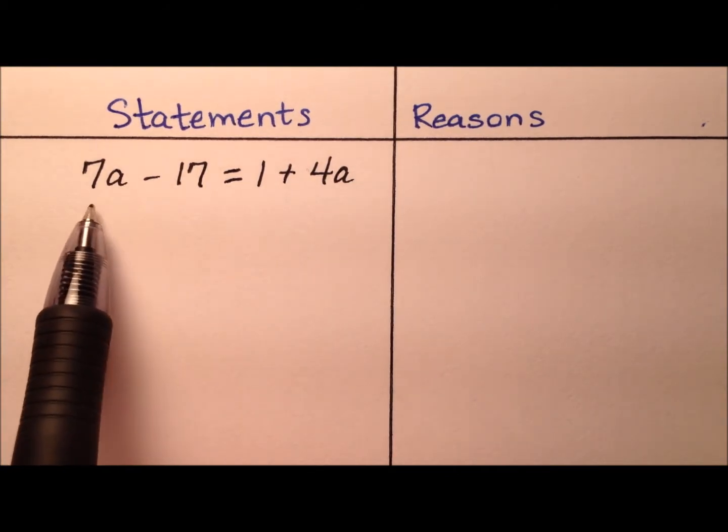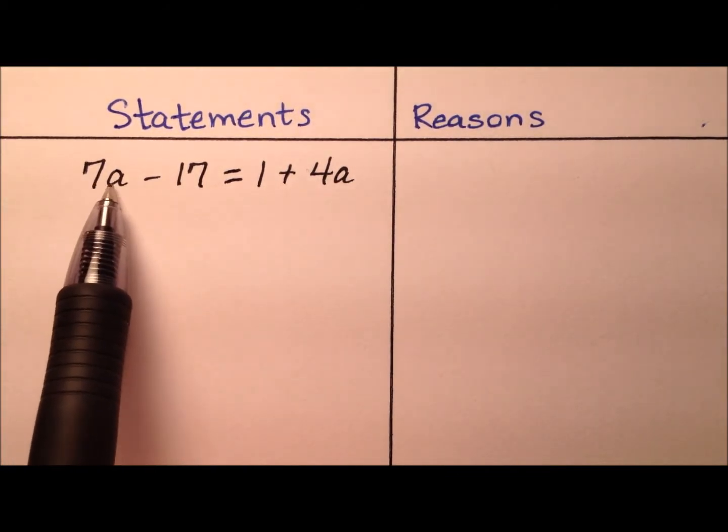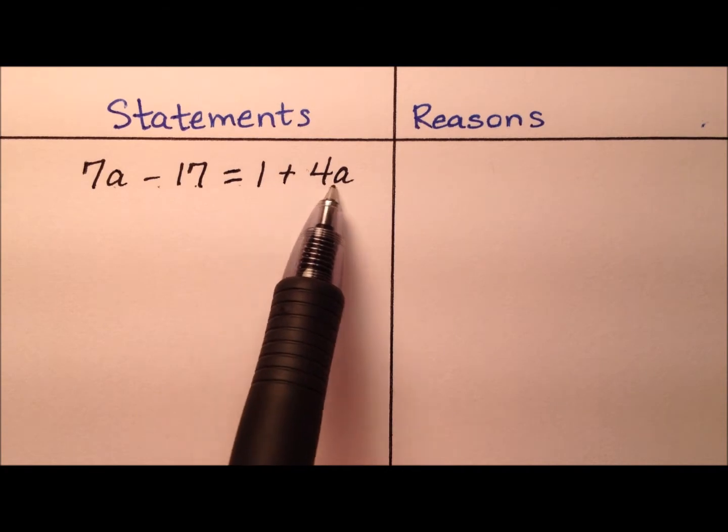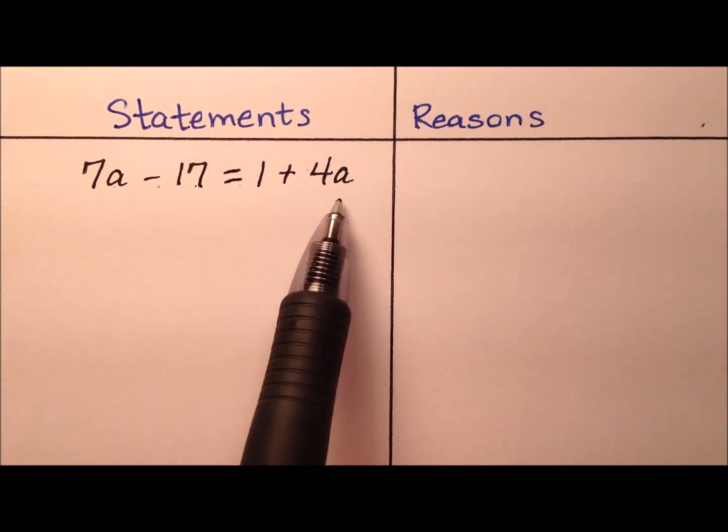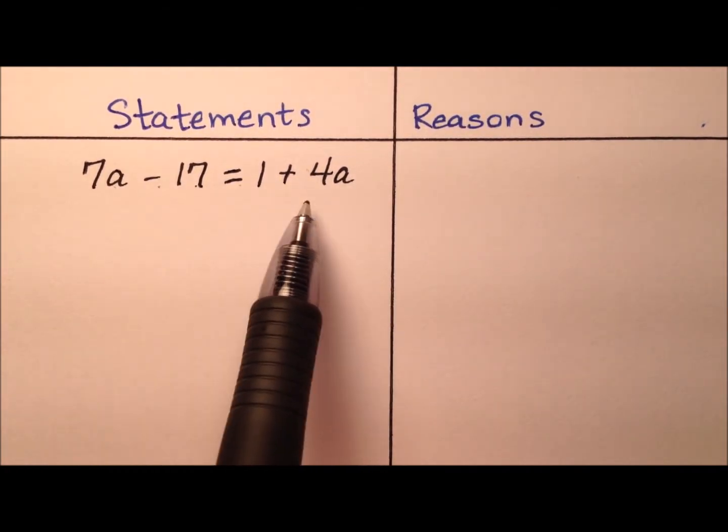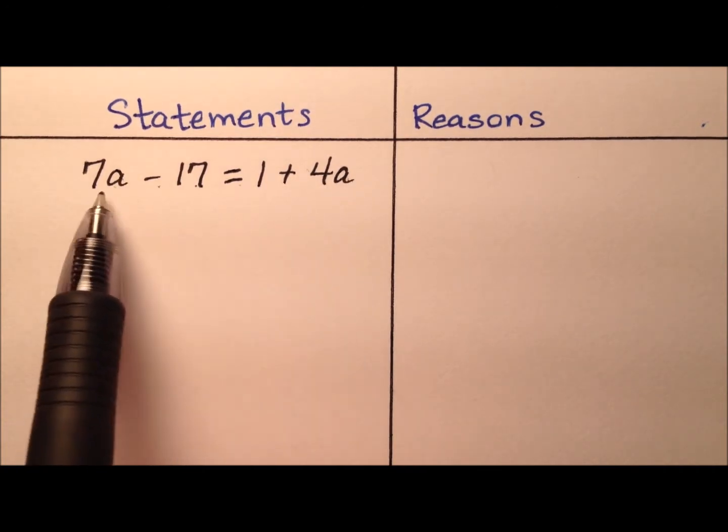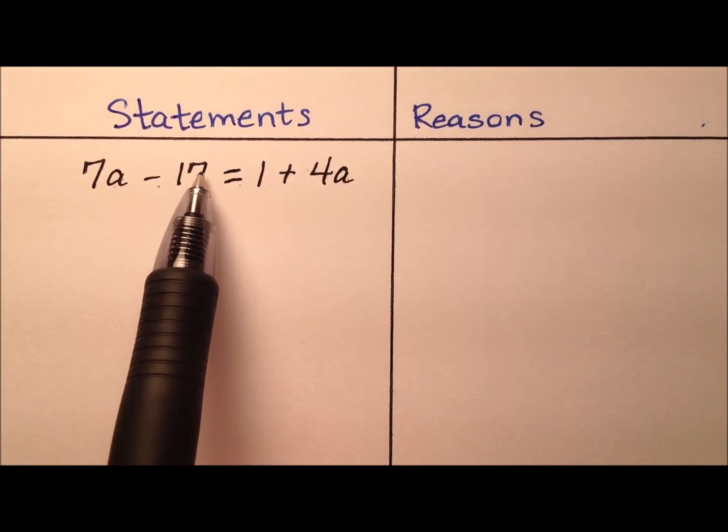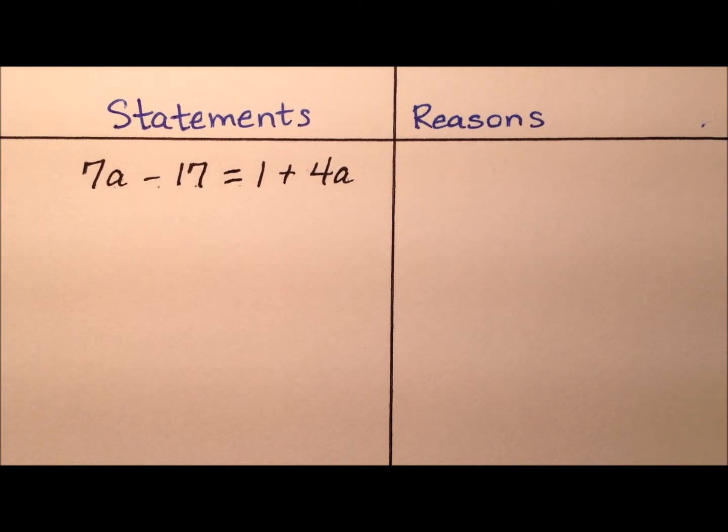In this example, we're going to walk through and solve this equation: 7a minus 17 equals 1 plus 4a. To solve an equation like this, we're just trying to isolate that variable a on one side of the equation and get those constants on the opposite side.